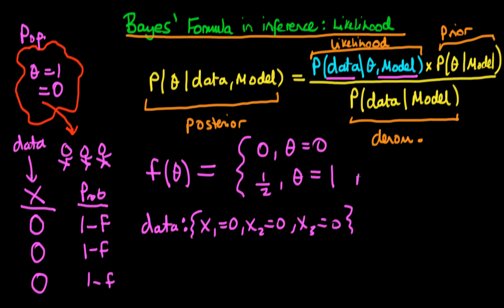Let's define what we mean by a model. The model represents, firstly, the way in which the individuals were sampled from the population. I'll assume that the infected status of one individual does not confer any additional information about another individual's infected status beyond the fact that they come from the same population — perhaps meaning they're not from the same family. So we assume they are independent and identically distributed, which in statistical language means they are randomly sampled.